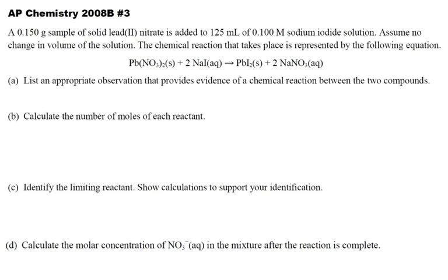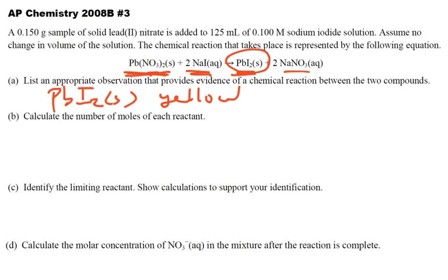Now we have a 2008 AP equation. This is an observation that provides evidence of a chemical reaction. Lead nitrate is a white crystalline solid; when mixed with sodium iodide solution (also colorless), it forms a precipitate and sodium nitrate which dissolves. Lead iodide (PbI₂) is actually yellow, so it forms a yellow precipitate. If you said there was a precipitate formed, you'd be okay, but it is specifically a yellow precipitate.